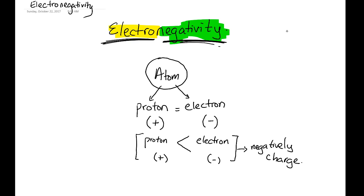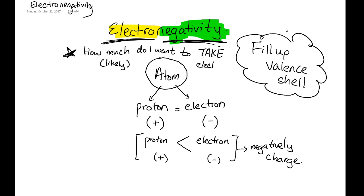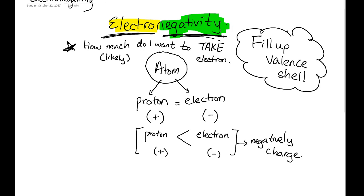The idea of electronegativity is about how much you want to fill out the valence shell by taking in electrons in order to become negative — not giving electrons away, because if you give electrons away, you will not become negative. So electronegativity means: how much do I want to take in electrons to become negative?